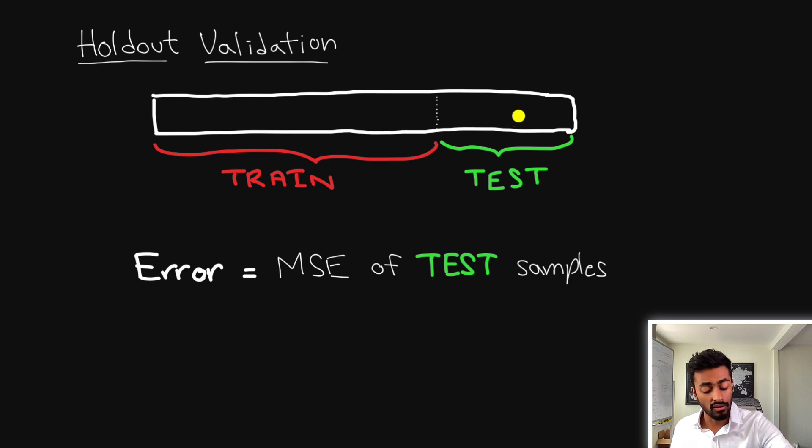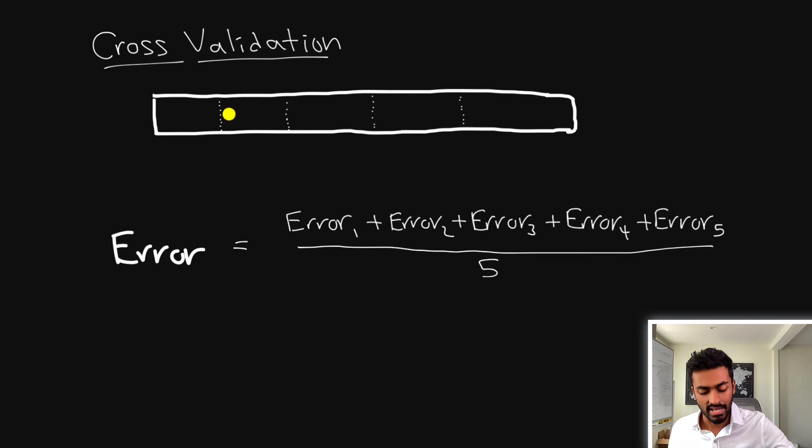However remember in the holdout validation set we have only some amount of data that's for training but this remaining data which we could have used for training is now used for evaluation. And this training data when it's very small could have been very crucial to the model if we had more of it. And so cross validation tends to be a very preferred technique with lower limited amounts of data.